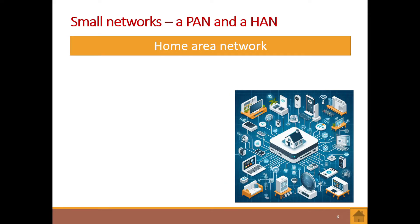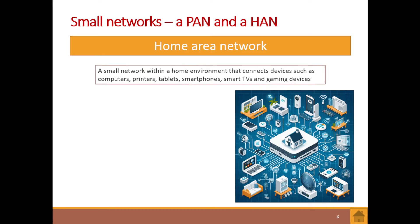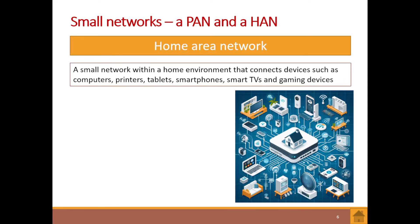Now we have a Home Area Network, or HAN — a small network within a home environment that connects devices such as computers, printers, and tablets. Think of your home: you have a router connecting your smartphones wirelessly, maybe your TV is connected, you've got Alexa, a laptop, Bluetooth speakers — all of this is essentially what a home area network is.